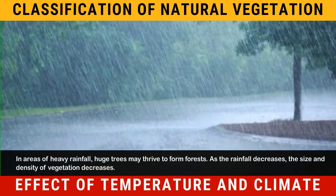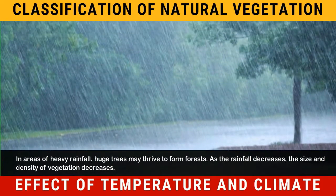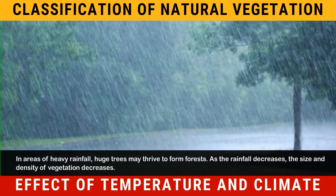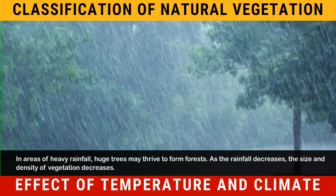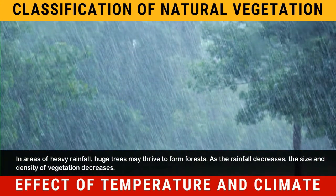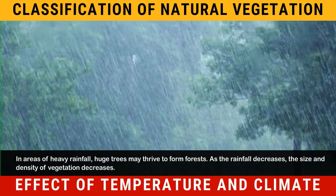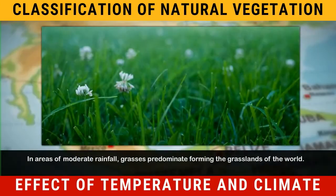In areas of heavy rainfall, huge trees may thrive to form forests. As the rainfall decreases, the size and density of vegetation decreases. In areas of moderate rainfall, grasses predominate, forming the grasslands of the world.